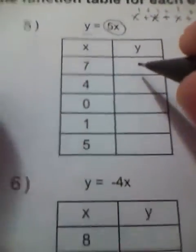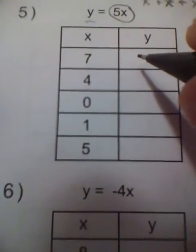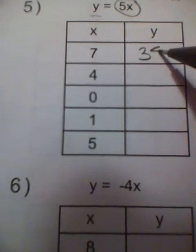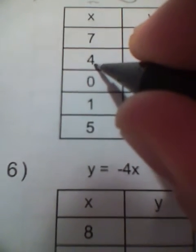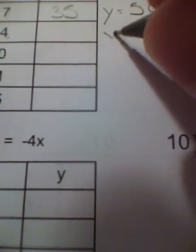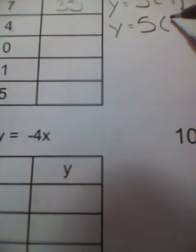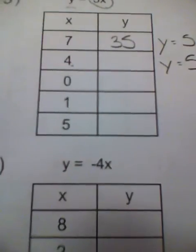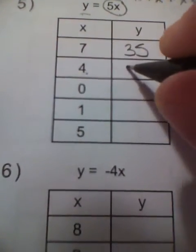5 times 7 is 35. So when x is 7, y is 35. Next one says x is equal to 4. I use the same function: y is equal to 5, the constant, times my variable x. Now I'm substituting it with a 4. 5 times 4 is 20.